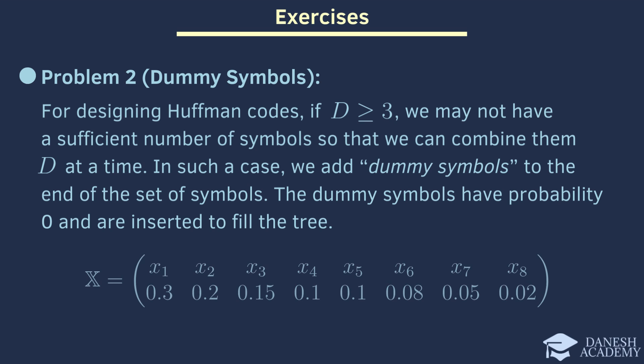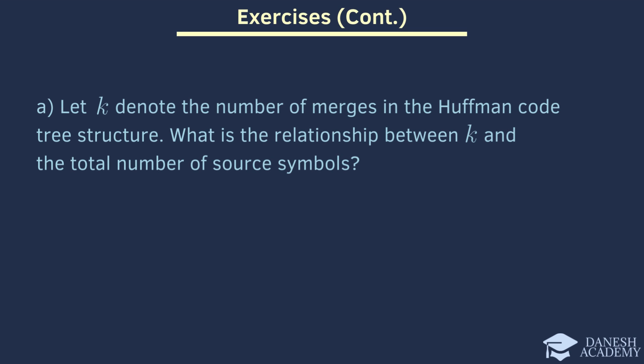Well, we have got this discrete information source. First off, let's use k to denote the number of mergers in the Huffman code tree structure. What's the relationship between k and the total number of source symbols? Finally, let's find the ternary Huffman code for this discrete source. And if you want the answers, just ask for them in the comments.